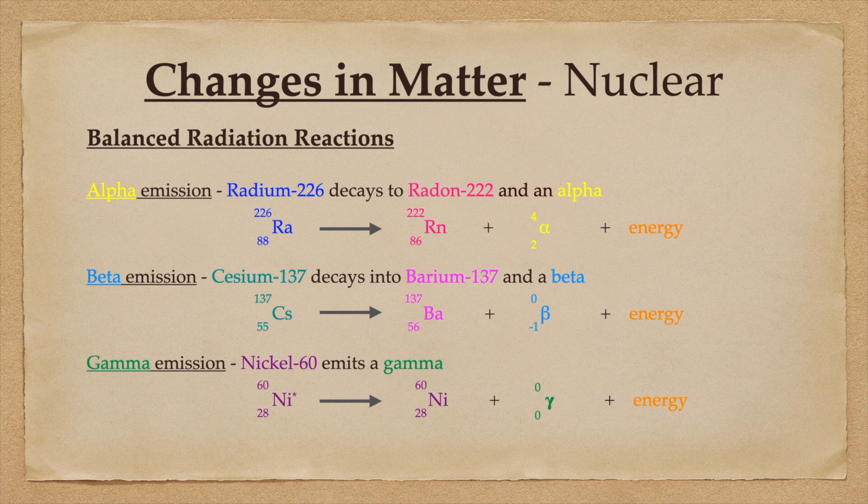For a gamma emission, nickel-60 emits a gamma, produces nickel-60, gamma, and some energy. Of the three ways that a nucleus can change, radiation is the lowest energy, although it's still a lot of energy.